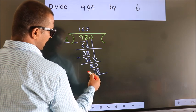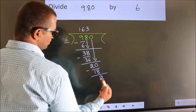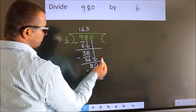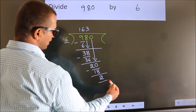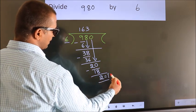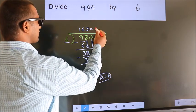Now, we subtract. We get 2. No more numbers to bring down, so we stop here. This is our remainder. This is our quotient.